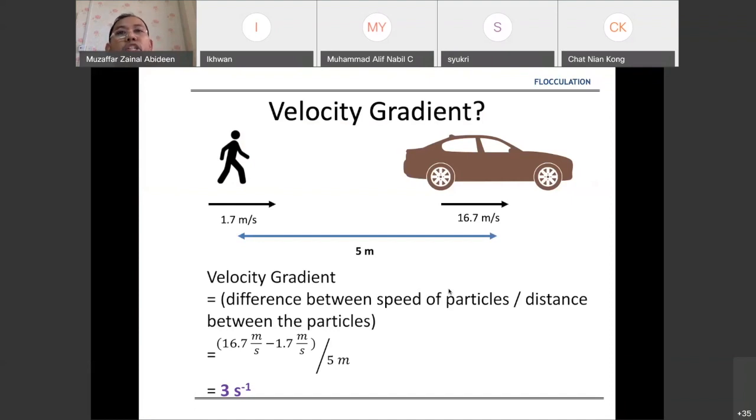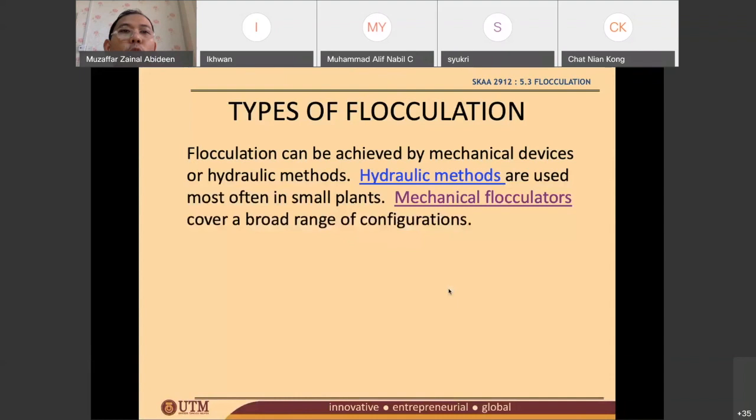You need to know the Camp number in flocculation tank, which is Gt, and you need to know the velocity gradient and also the detention time.